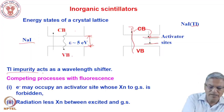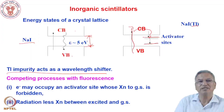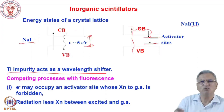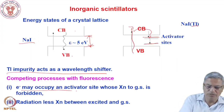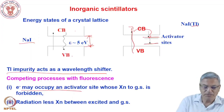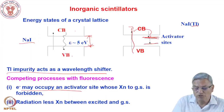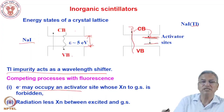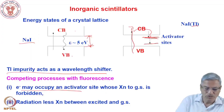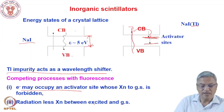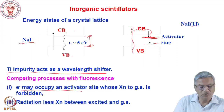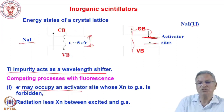By adding 0.1% of thallium to sodium iodide, you get a high fluorescence yield material with a wavelength compatible with the PMT. The thallium impurity acts as a wavelength shifter, similar to POPOP in organic scintillators. However, the fluorescence intensity is not very high because competing processes exist — electrons in the conduction band may occupy activator sites that undergo radiationless transitions rather than fluorescence emission, which lowers the overall fluorescence intensity.